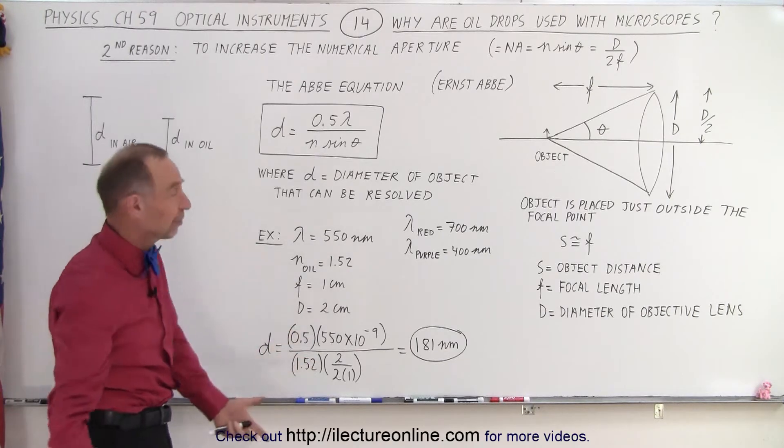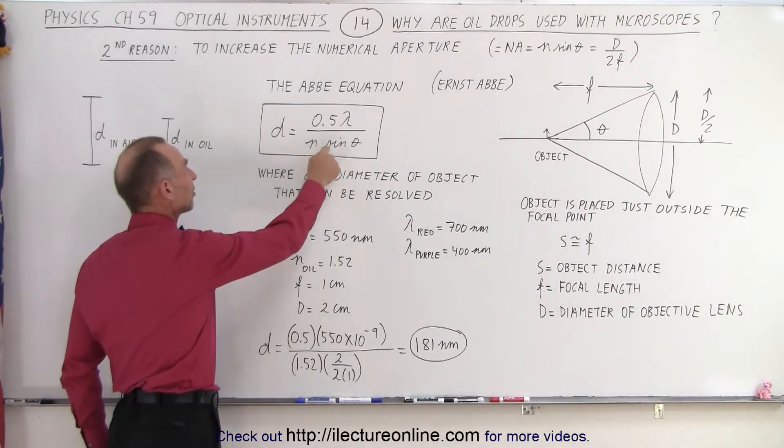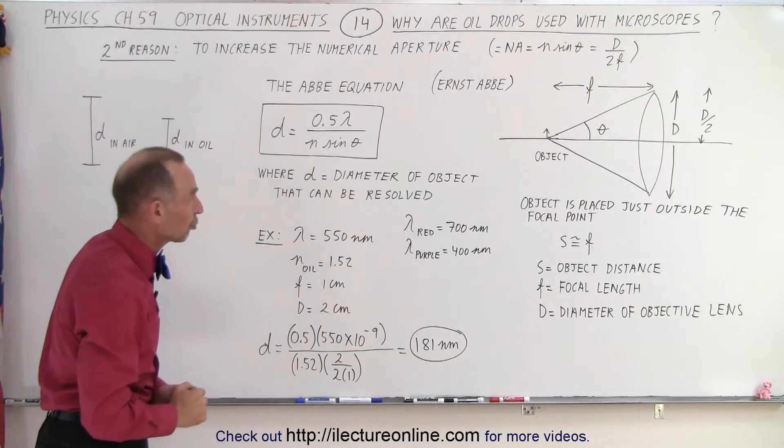well of course in this case it would be visible light, divided by n times the sine of theta, which is known as the numerical aperture.